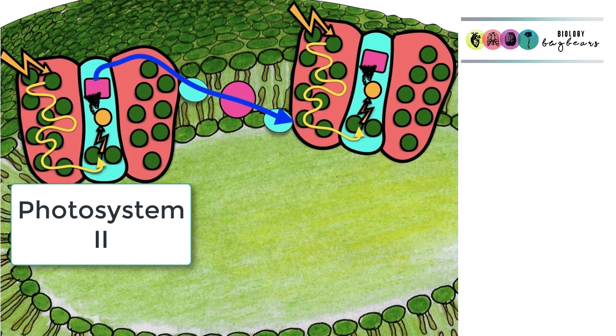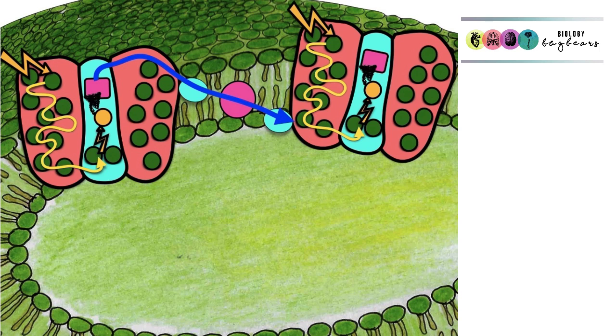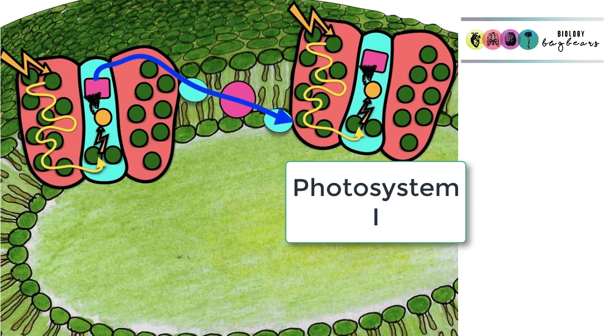Let's recap. Energized electrons left reaction-center chlorophyll in photosystem 2. They were picked up by an acceptor molecule and passed over an electron transport chain. This resulted in the generation of ATP. They then made their way into photosystem 1, which is now going to absorb more light energy and results in electrons being energized.